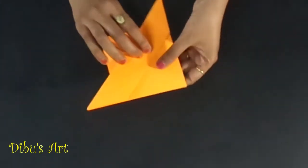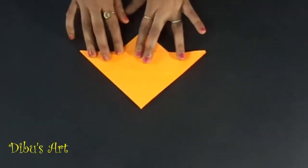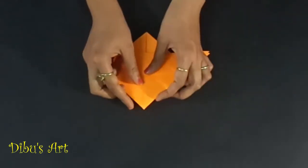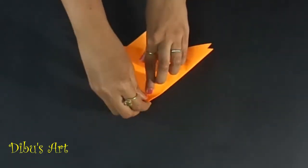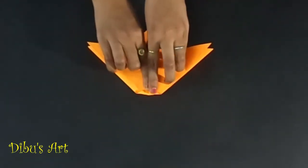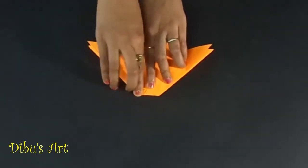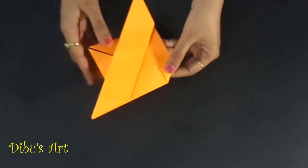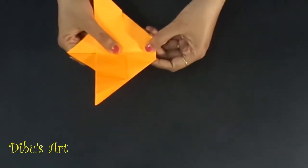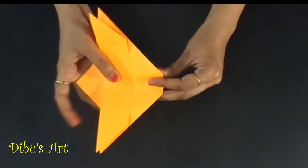Reverse the folded paper. Now fold the pointed end towards downward horizontally as shown in the video. This fold will give strength and shape to the nose of the plane. Fold it from center crease.